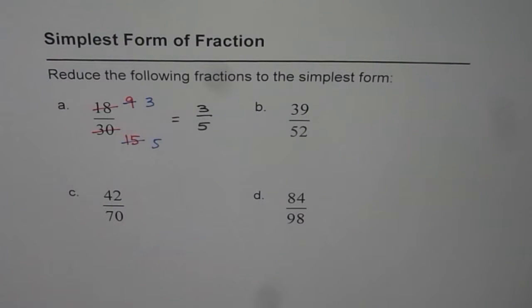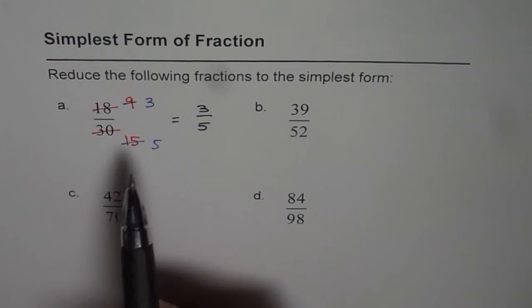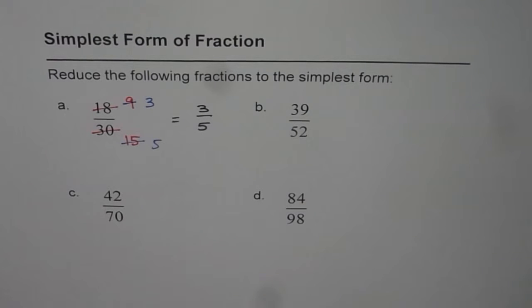Since 3 and 5 do not have any common factor except 1, this is the simplest form of the given fraction which is 18 over 30. I hope that is absolutely clear.